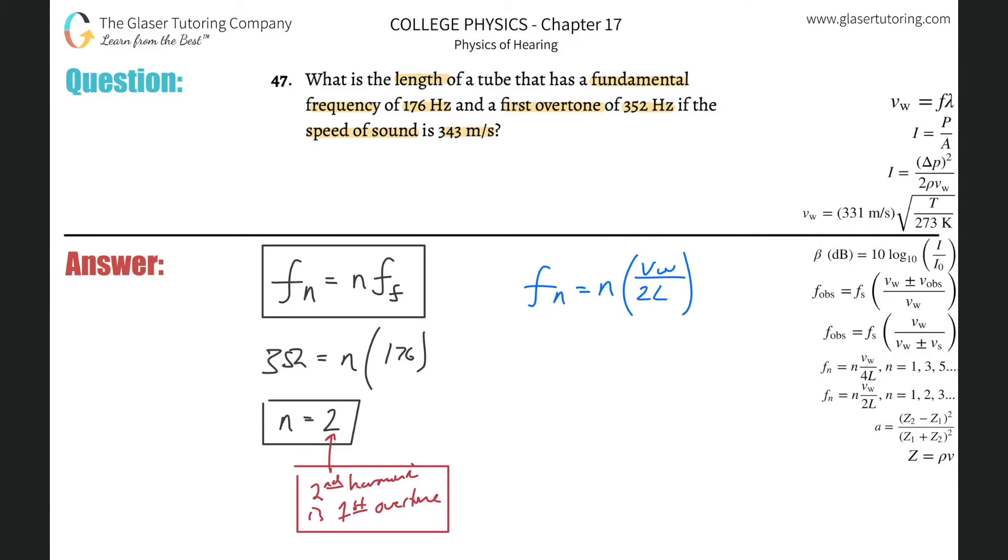Now, what we can do here is we can actually use either value. It doesn't matter if we use 352. And for the frequency here, if we do, we better choose n is 2. You got to have them be consistent. So if you're going to do the first overtone, which correlates with the second harmonic, you better plug in 2 for n. Or we can choose the fundamental frequency value. If we plug in the fundamental frequency here, which is basically the frequency of the first harmonic, then that means n would be 1. And you're going to get the same exact answer. It doesn't matter. So I'm going to plug in the fundamental frequency.